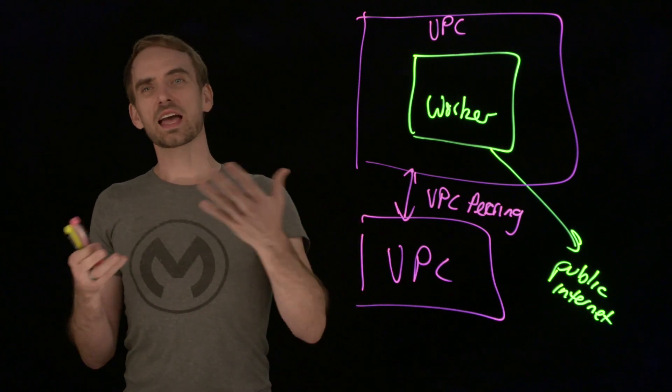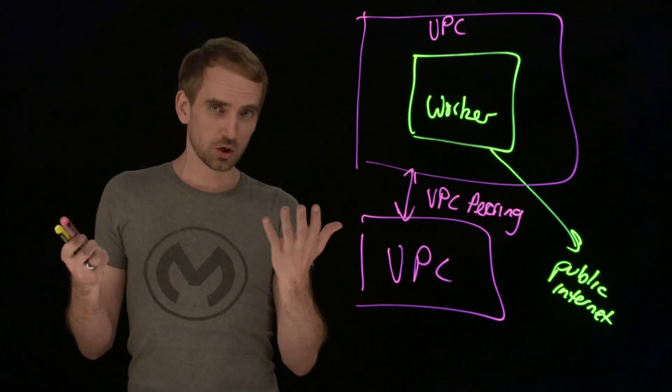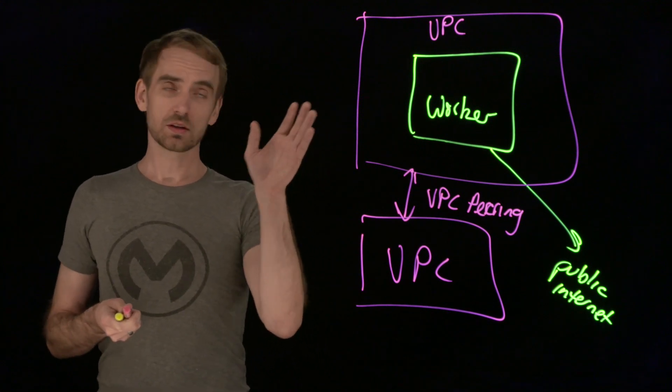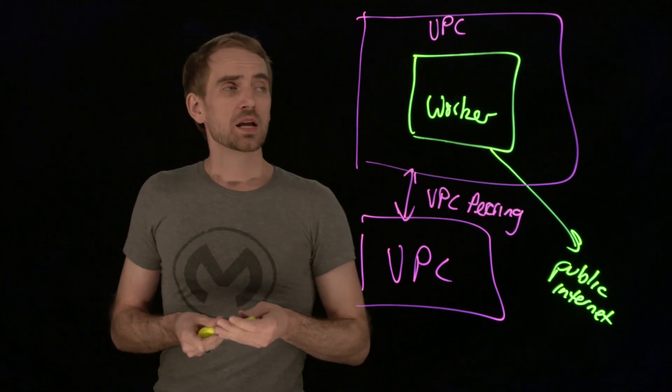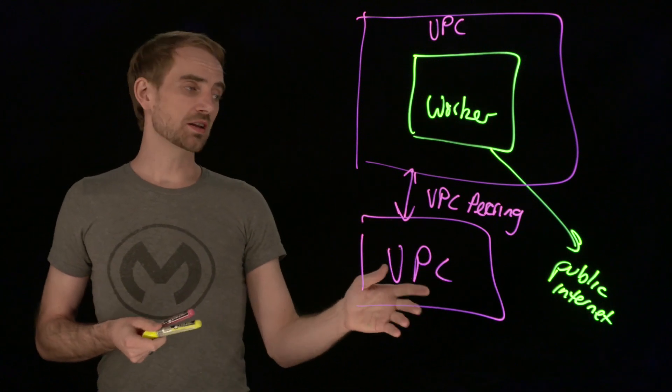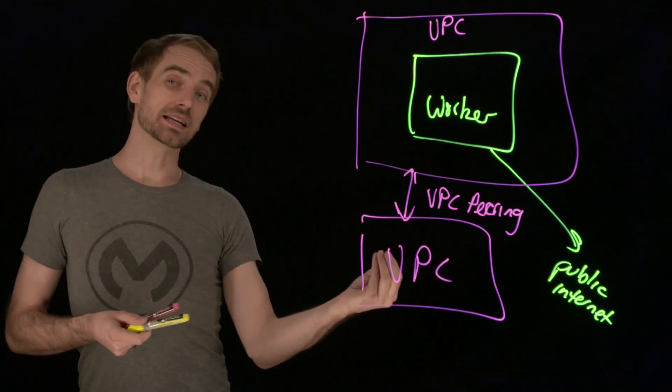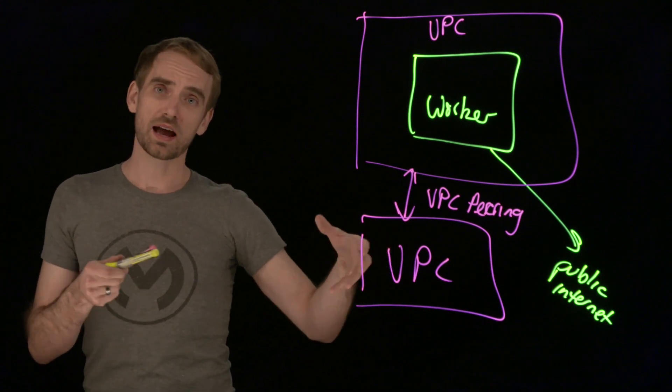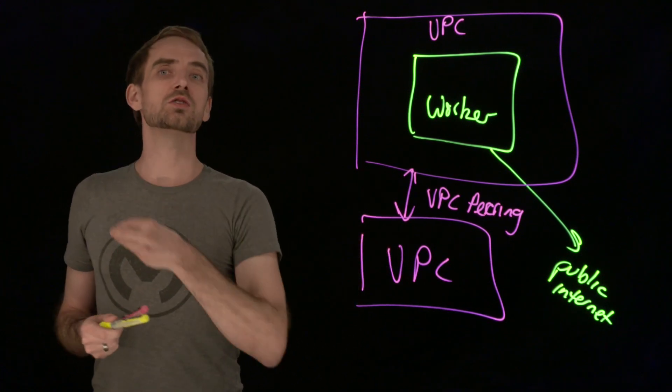Let's assume you're in a more traditional data center model. You've got some system that you need to talk to from your CloudHub worker. To avoid going out to the public internet, which would mean most likely that you then have to come in through a DMZ, you have to punch holes into your ecosystem.